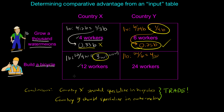To review, the difference between an input table and an output table is that the variable given is not the number of units of output that can be produced, but rather the number of units of inputs needed to produce a single unit of output — in this case, the number of workers needed to grow a thousand watermelons and to produce a single bicycle. We can calculate opportunity costs and determine comparative advantage from this data.